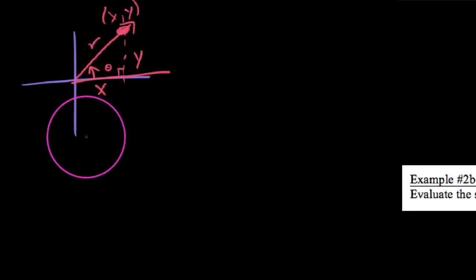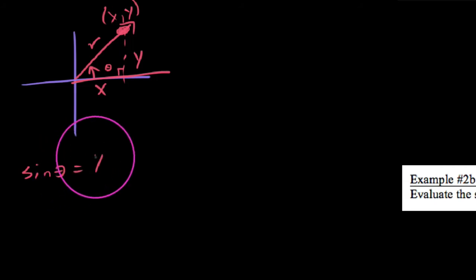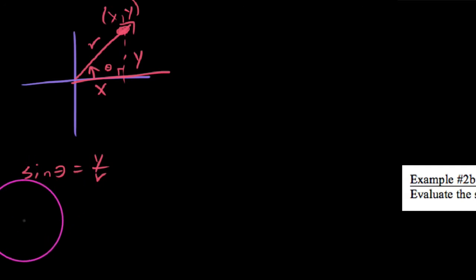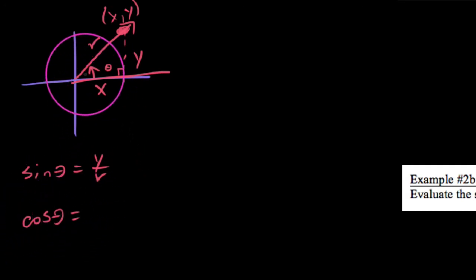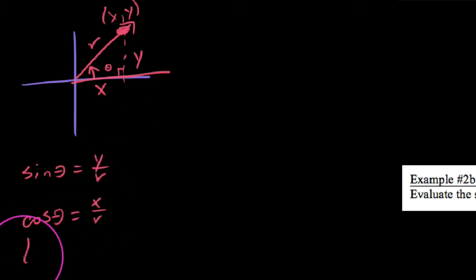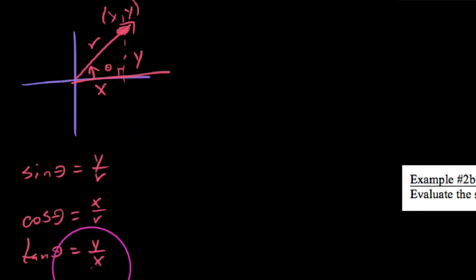Using that we could say the sine of theta would be y over r, because opposite over hypotenuse is y over r. Cosine of theta would be adjacent over hypotenuse, in this case x over r. And tangent of the angle theta would be opposite over adjacent, which is y over x.